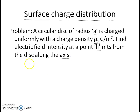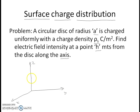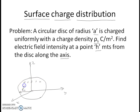The problem is something like this. We have the circular disk, which is in the z equals zero plane. The radius of the disk is R1. This disk is charged uniformly, so this is a surface charge distribution.